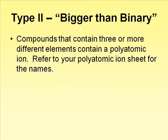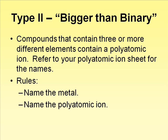Inorganic compounds that contain more than two elements will contain one of our polyatomic ions. I have called this category Type 2 and have nicknamed it 'bigger than binary' since it will contain more than two different elements. You can refer to your polyatomic ion sheet for the names of these ions, but eventually you will need to memorize them. The rules for Type 2 compounds are quite simple: name the metal, which again will come first, then name the polyatomic ion. There are no ending changes with this type of compound.